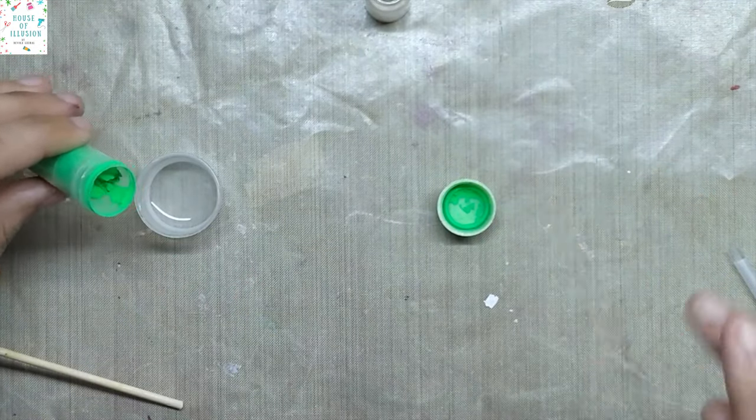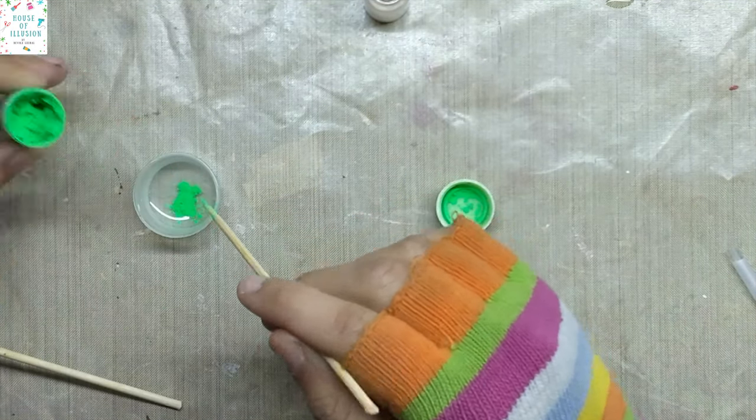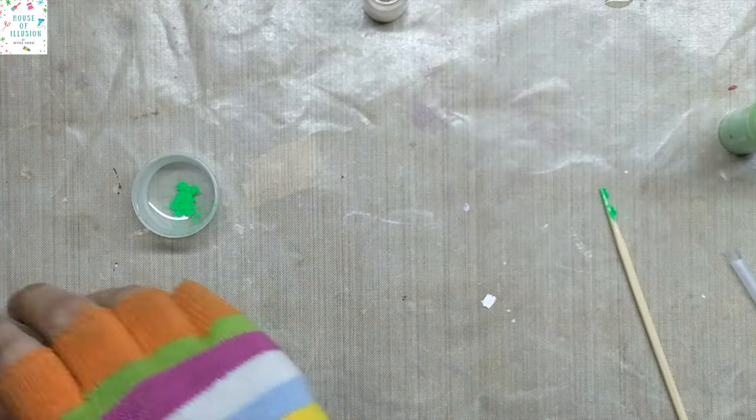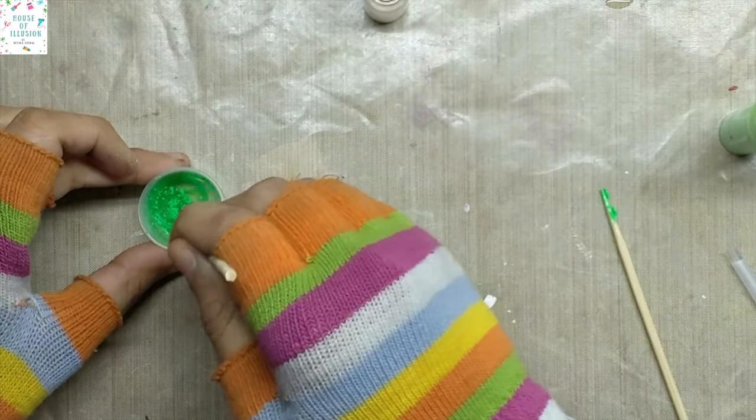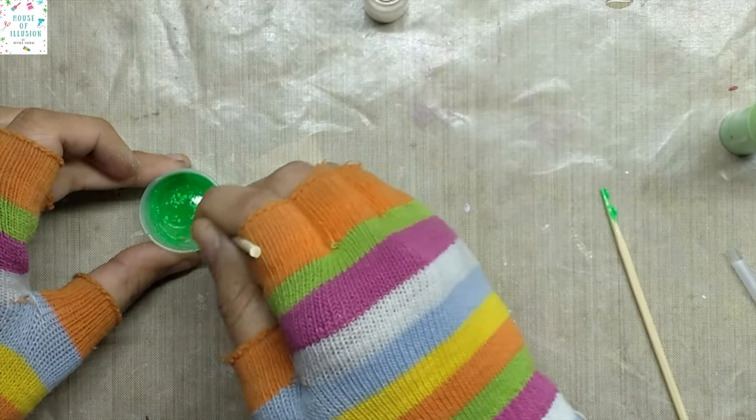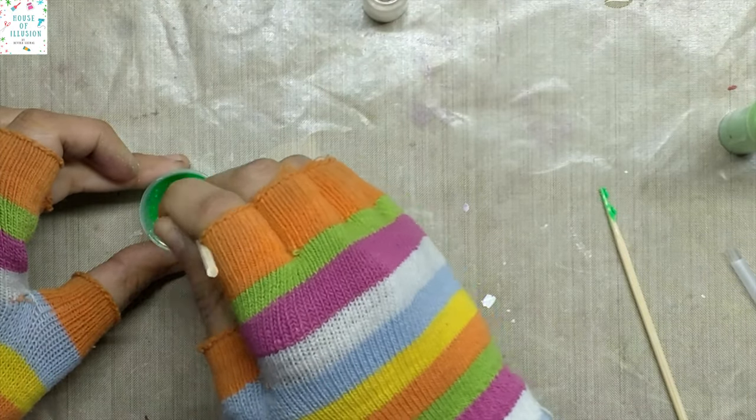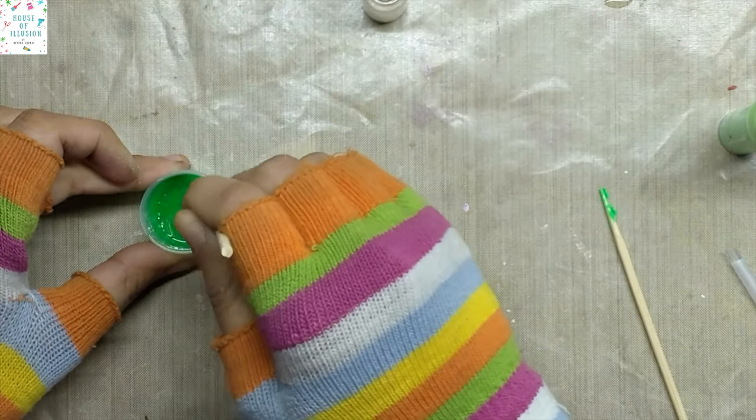Start with mixing the neon green pigment in the pre-mixed resin mixture. Mixing of the resin is covered in the other video - check the link above to view that video. Mix it thoroughly and ensure that no color strand is there.